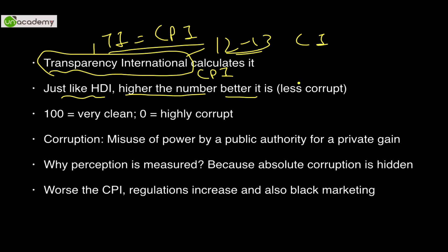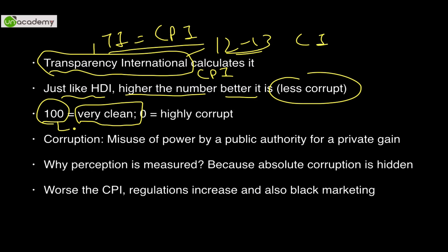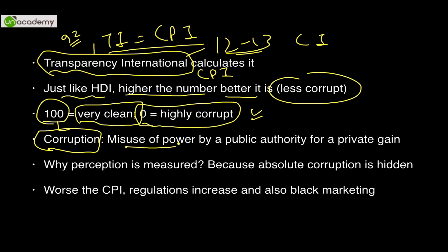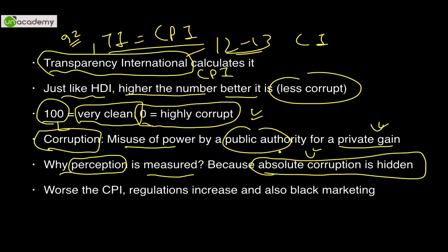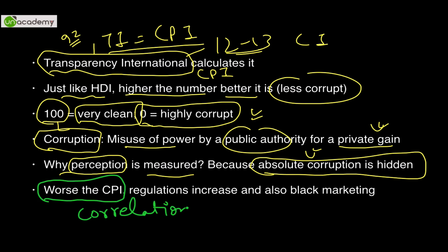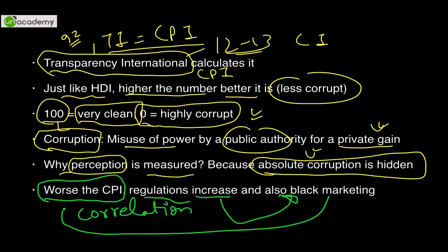Just like the HDI, a higher CPI score is better — it means less corruption. A score of 100 is theoretically perfect; the best-performing countries today have around 92. Zero indicates highly corrupt, though that is also theoretically impossible. We measure perception rather than real corruption because absolute corruption is hidden. There is also a correlation: as CPI worsens, government regulations increase, which in turn increases black marketing, worsening CPI further — a vicious cycle.